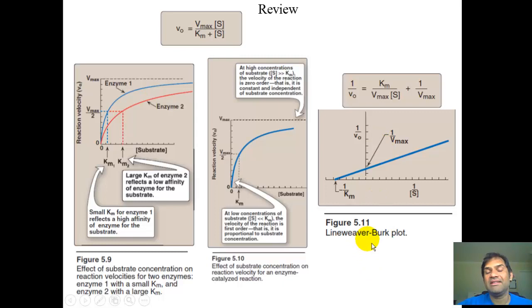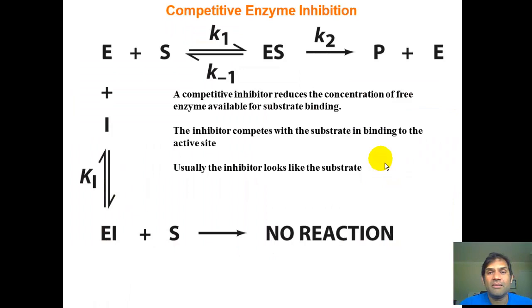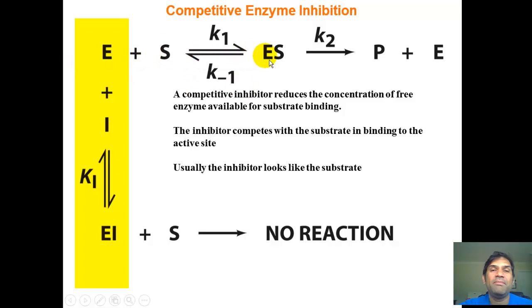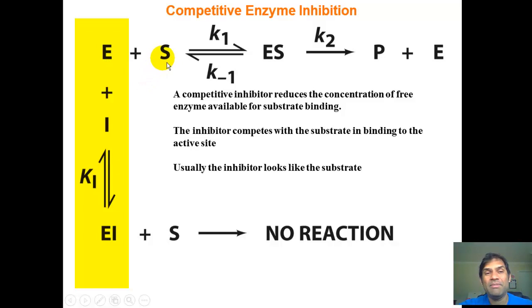Now we introduce inhibition. Many of these examples are drugs you may have seen in the mainstream or at the pharmacy. Starting from our steady-state equation, we alter it by adding inhibitors. The first type is the competitive inhibitor, which binds to the active site, competing with the substrate for the enzyme's active site.